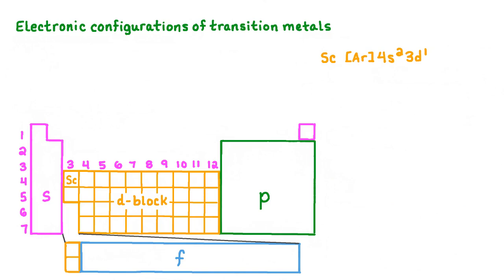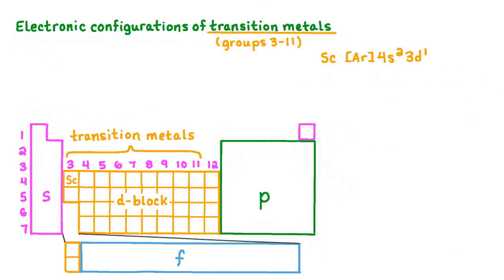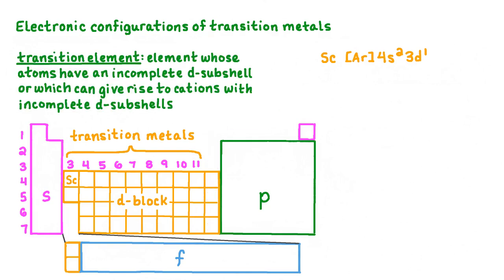Now that we've written an electron configuration for the first element in the D-block, we're going to take a deeper look at the electron configurations of the transition metals. The transition elements are metals found in groups 3 through 11 on the periodic table. The elements in group 12 — zinc, cadmium, mercury, and copernicium — are generally not considered transition metals. A transition element is defined as an element whose atoms have an incomplete D subshell, or which can give rise to cations with incomplete D subshells.